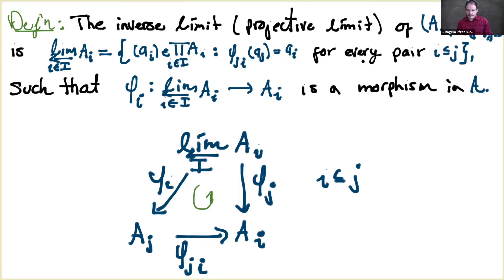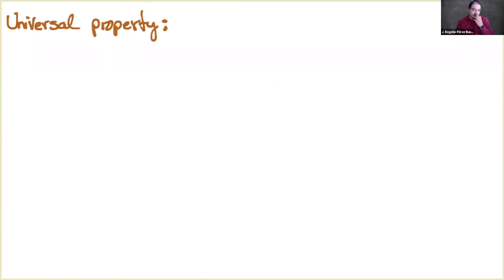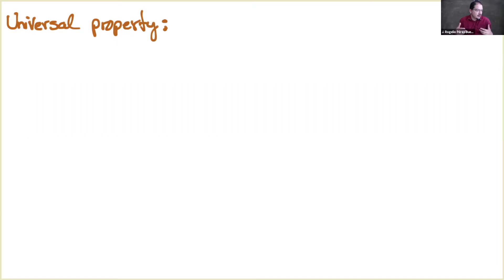The universal property of the projective limit: in general, the projective limit is not only the object but the object together with these morphisms φ_i. Usually when we talk about the projective limit we think just of the object, which is not very good, because this comes with the morphisms φ_i. But sometimes we call the projective limit just the object, while implicitly remembering the morphisms that come with it.